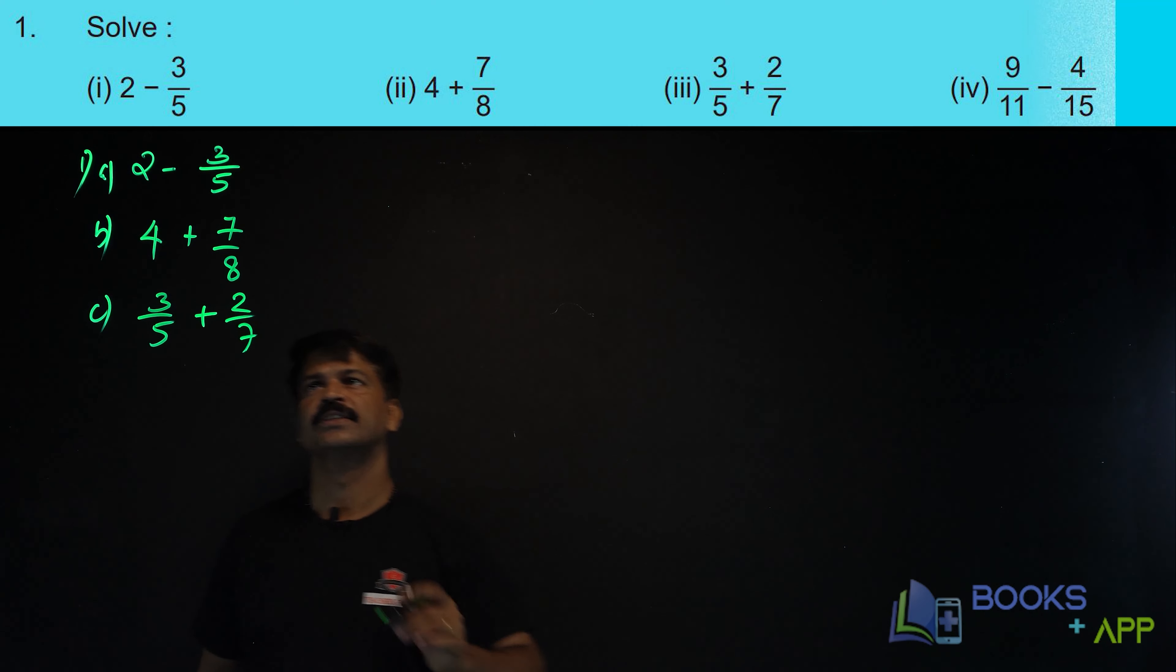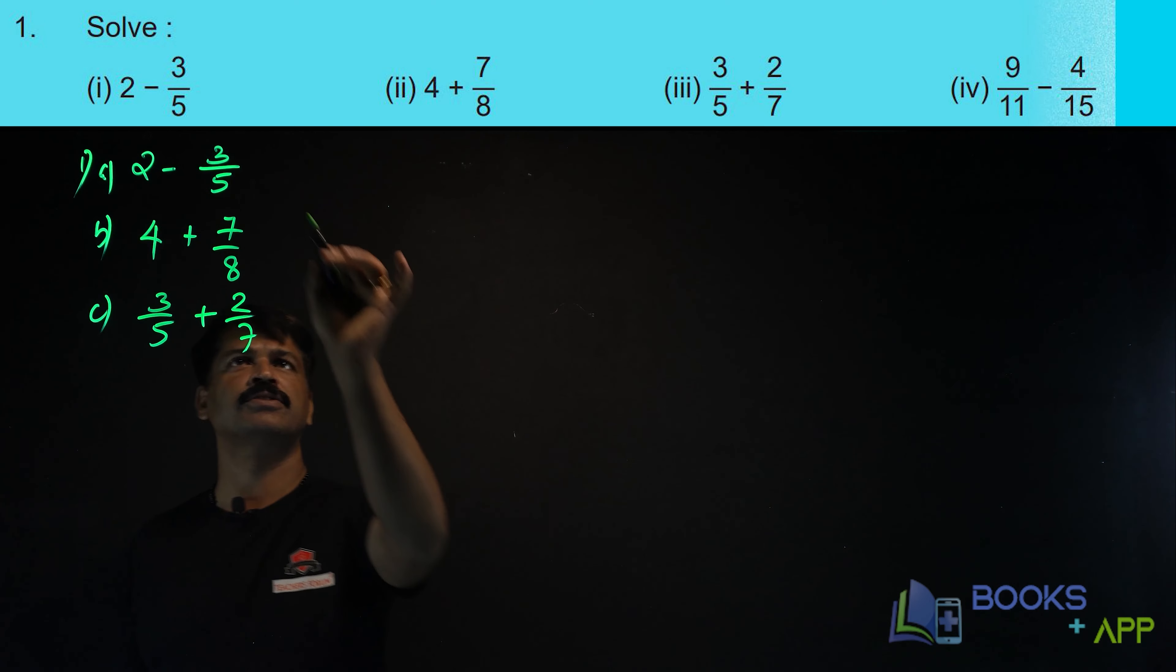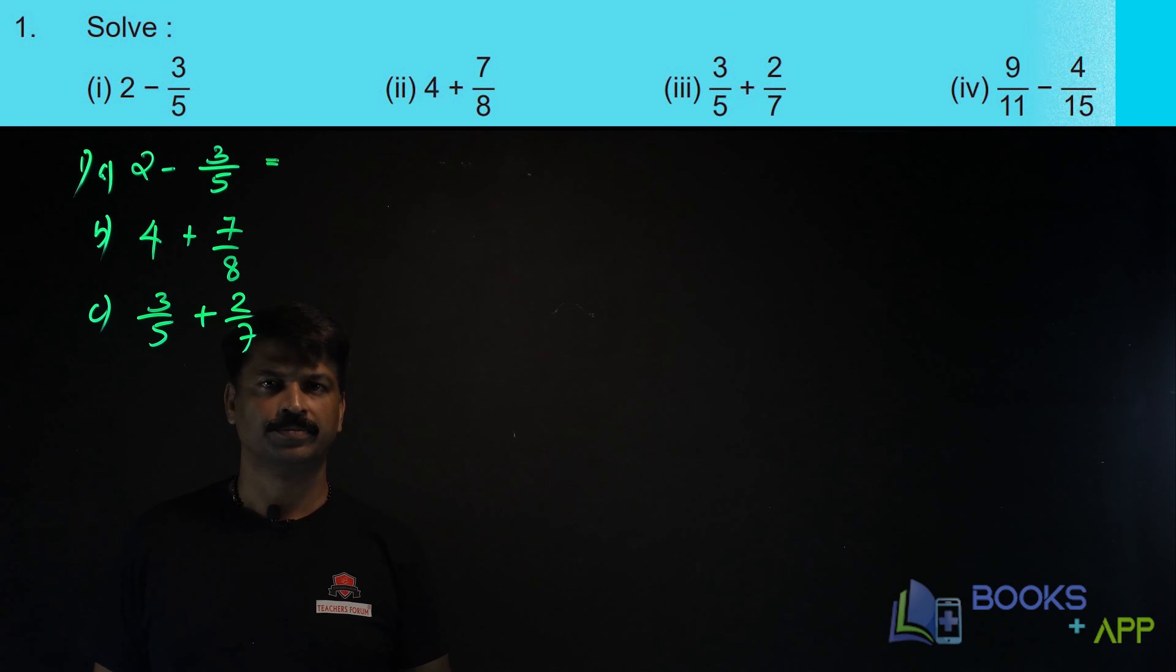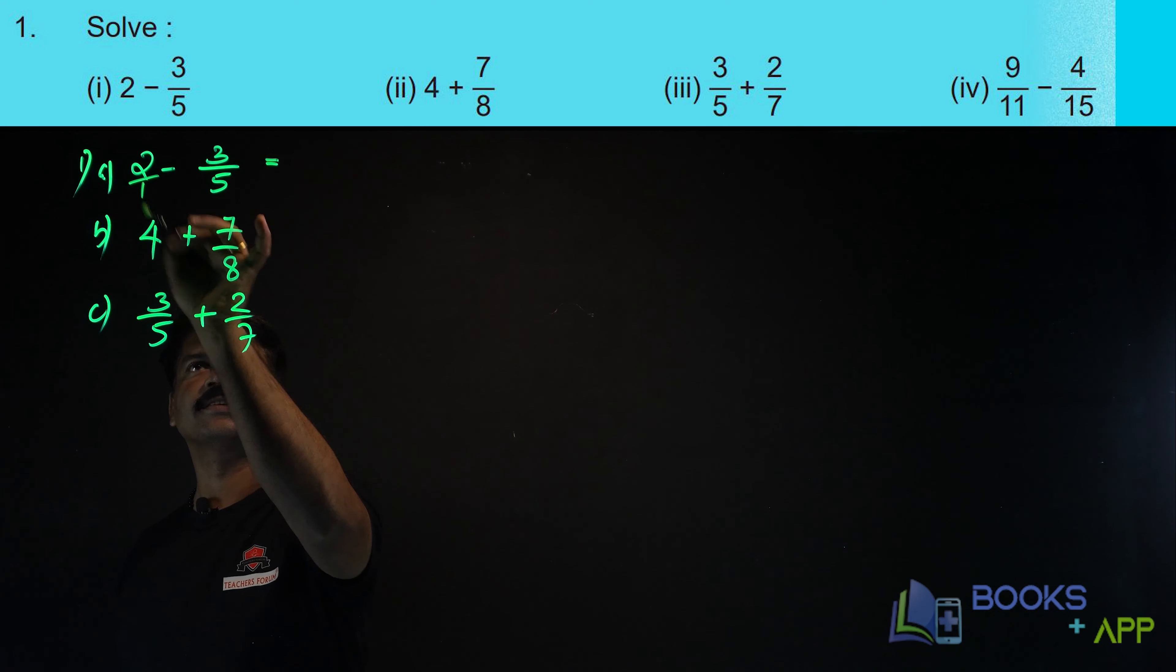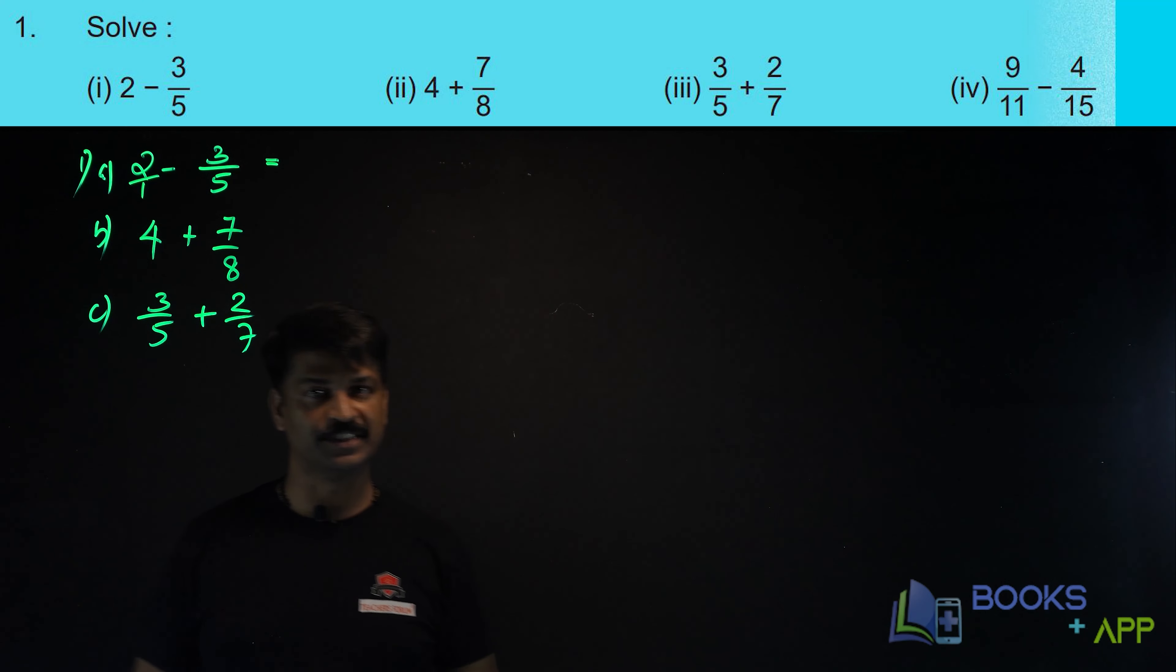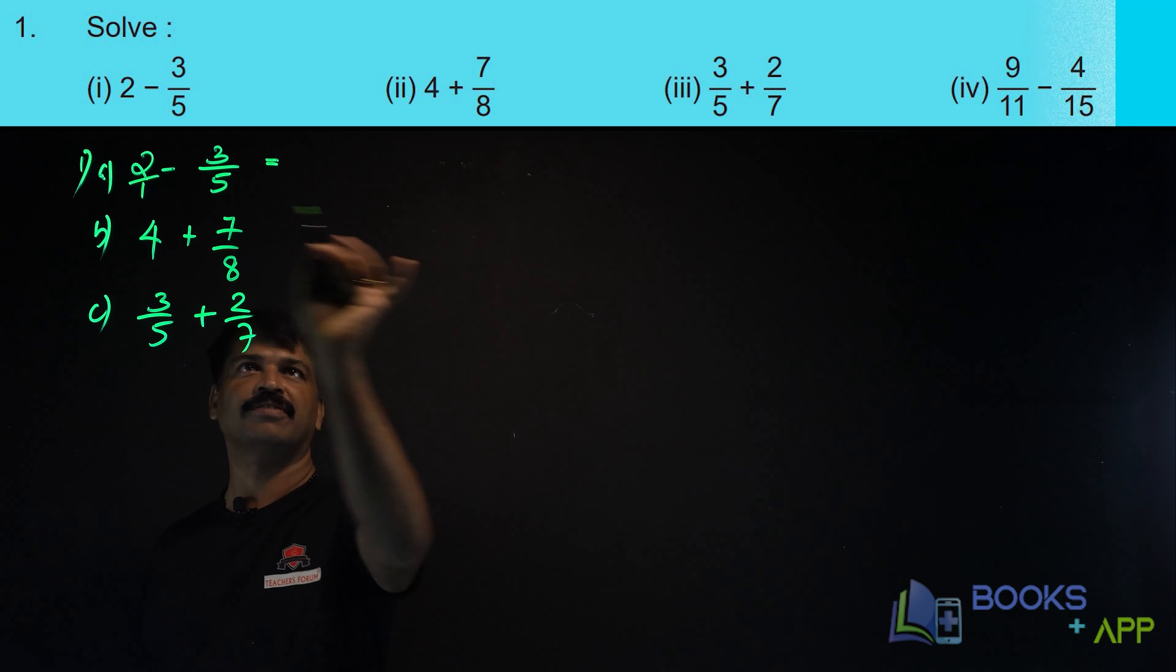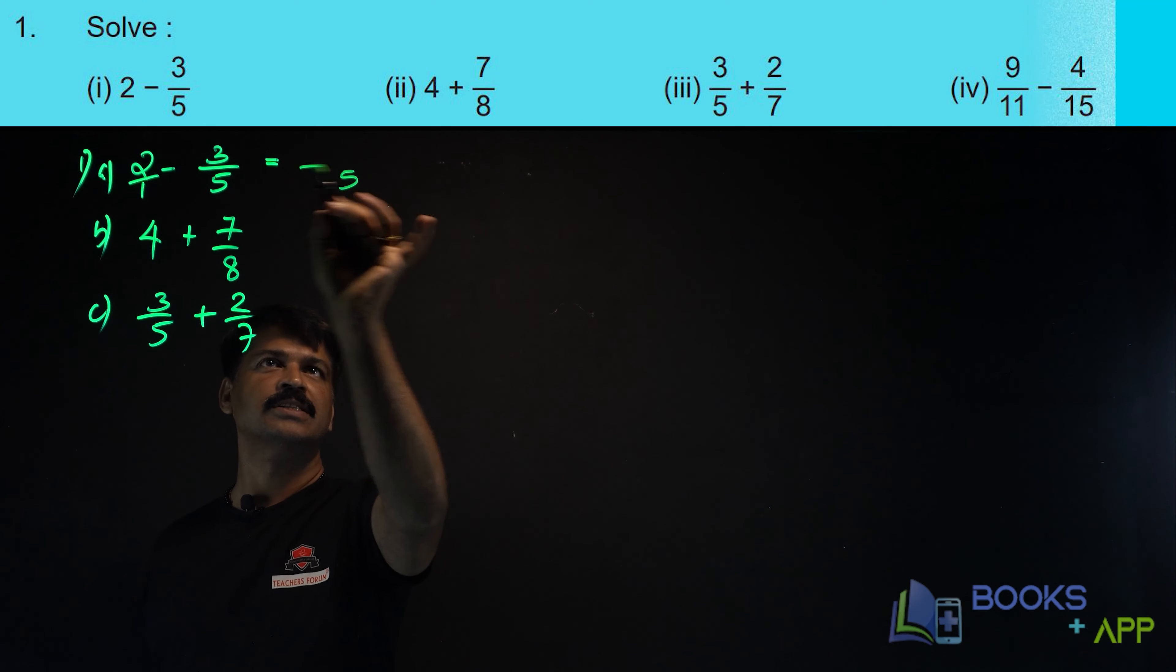Let us solve the first one. 2 minus 3 by 5. How can you solve this? What is the denominator here? It is 1. So, you have to find the LCM. What is the LCM here? 1 and 5. LCM is 5.